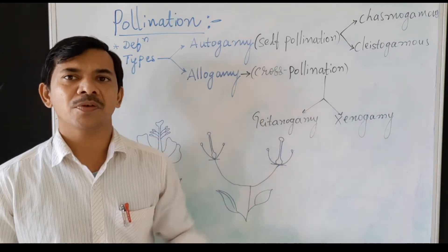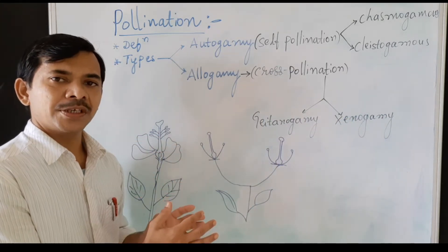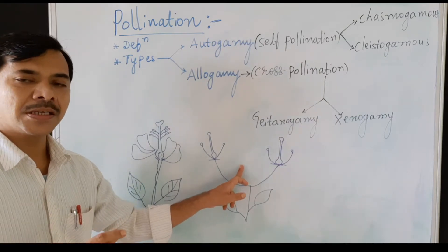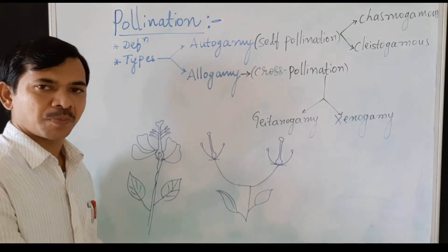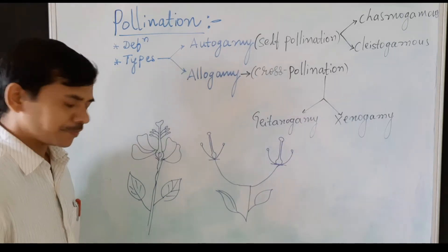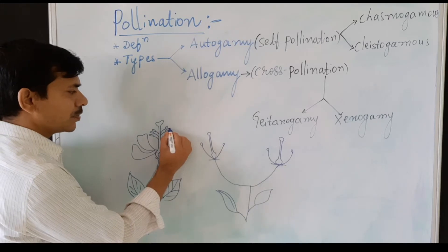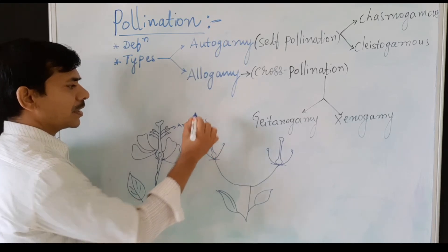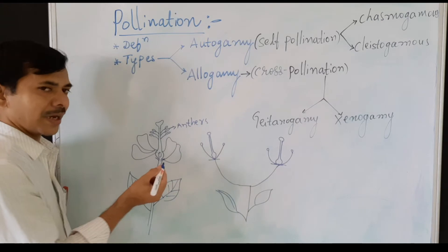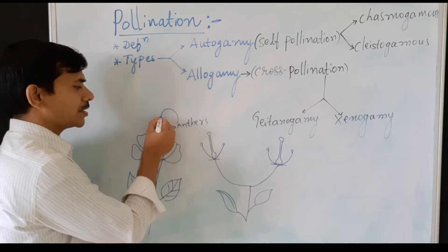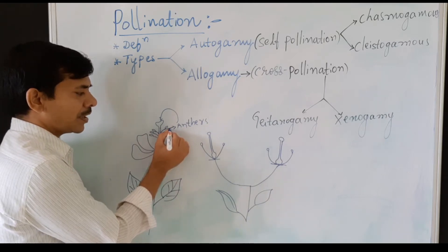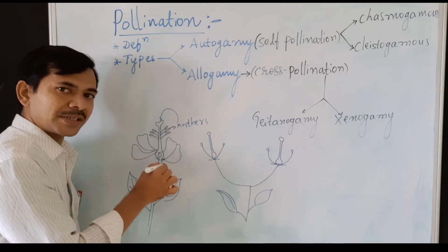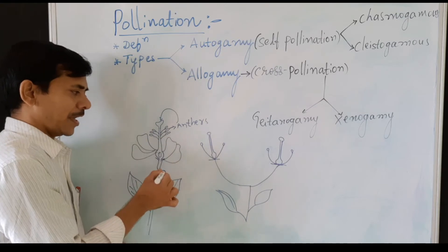These two diagrams are enough to understand the complete types of pollination. Looking at the diagram, these are the anthers, and from these anthers the pollen grains are released and they reach the stigma of the same flower. The transfer of pollen grains from the anther to the stigma of the same flower is called self-pollination or autogamy.